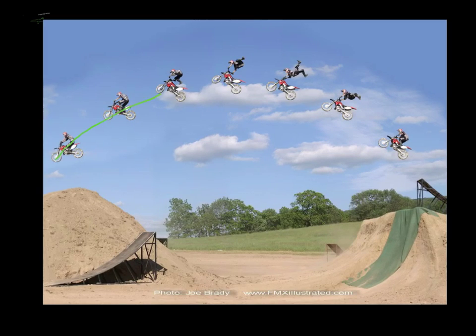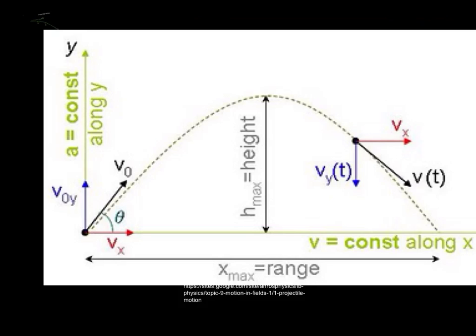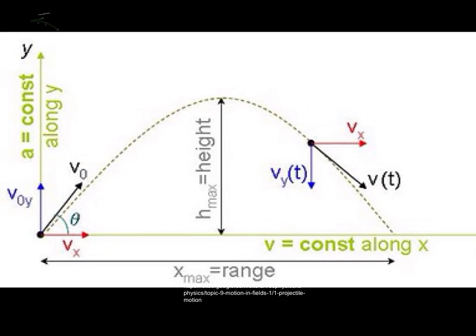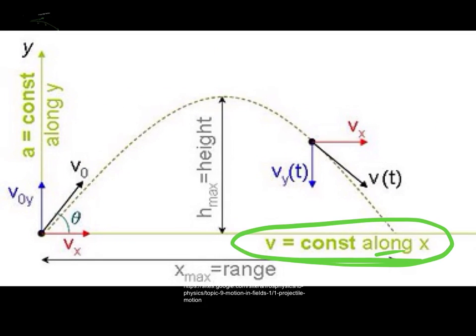You can see his parabolic path, and here he's at his maximum height from where he took off, and he makes an angle from where he left. Some things we should remember about projectile motion is that your x-velocity is constant — it stays the same the whole time, because there's nothing speeding you up or slowing you down horizontally.